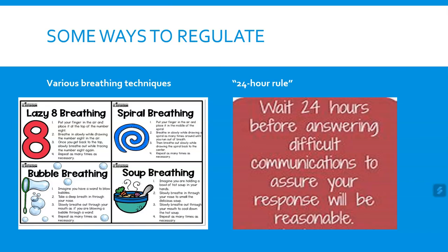This other technique is quite simple — it's called the 24-hour rule. If you have a major decision, a tough conversation, or a major event in your life, it's oftentimes best to wait 24 hours before approaching it. In that 24 hours you can slowly and calmly reflect and weigh the pros and cons so you make the best decision for you in the end.